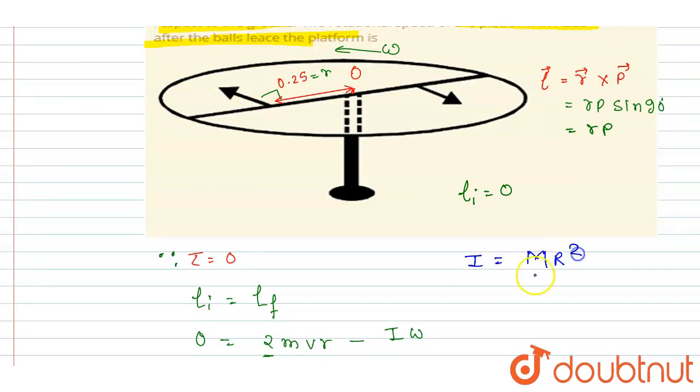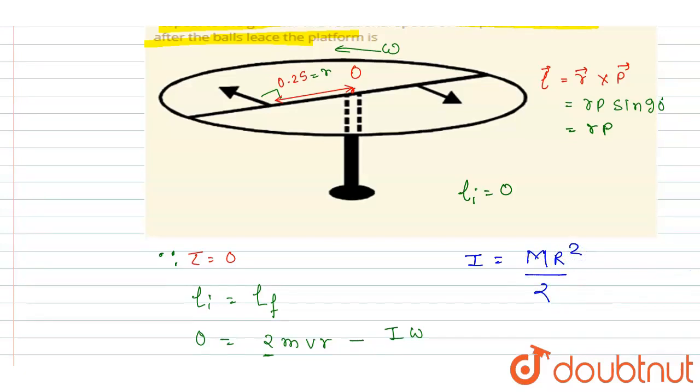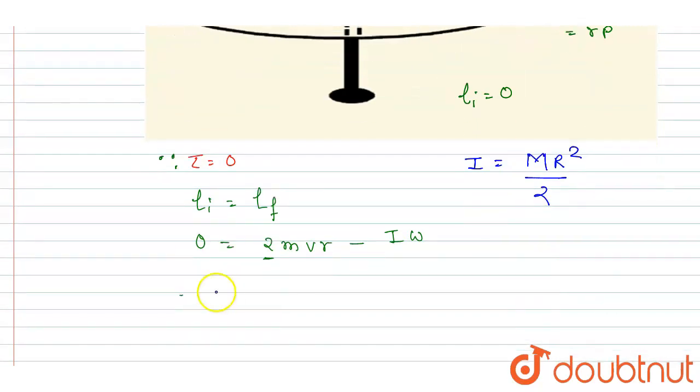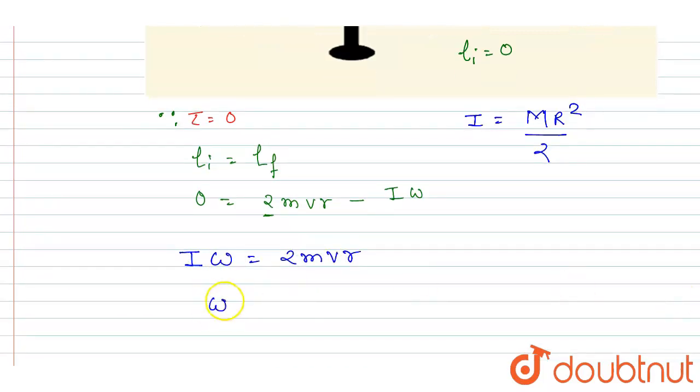Here M is 2 kg, R is 0.5 m. You can get the omega. So I will write I·ω = 2mvr. Now just put the values. So omega will be 2mvr/I.